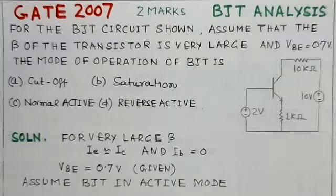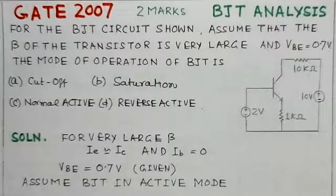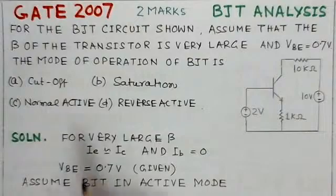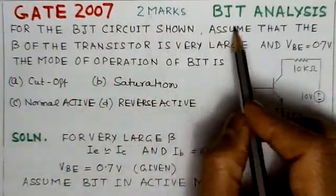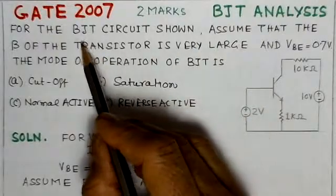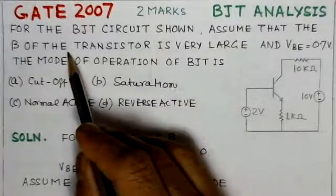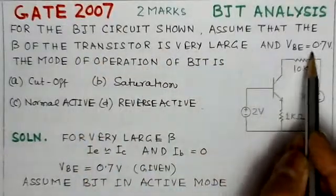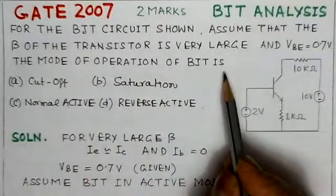This is the fourth problem on BJT analysis, a GATE 2007 question worth two marks. For the BJT circuit shown, assume that the beta of the transistor is very large and VBE is 0.7 volts. The mode of operation of BJT is...